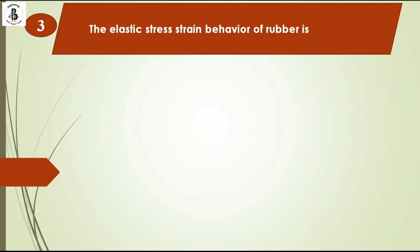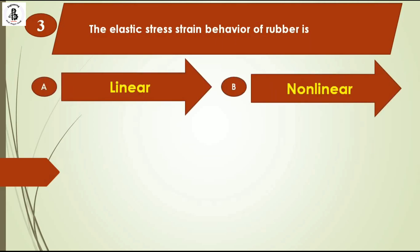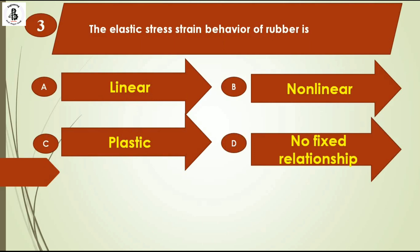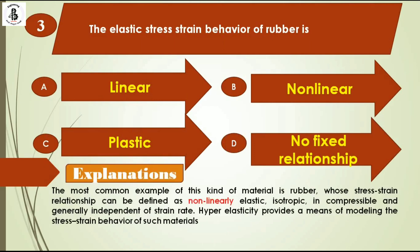The elastic stress-strain behavior of rubber is: option A linear, option B non-linear, option C plastic, option D no fixed relationships. The most common example of this kind of material is rubber, whose stress-strain relationship can be defined as a non-linear kind of elastic — isotropic, incompressible, and generally dependent on strain rate. The hyper-elastic model provides a means of modeling such materials. So the right answer is B, non-linear.